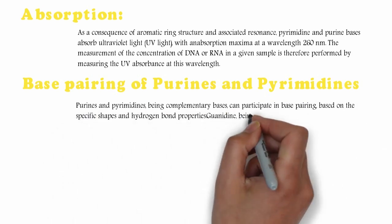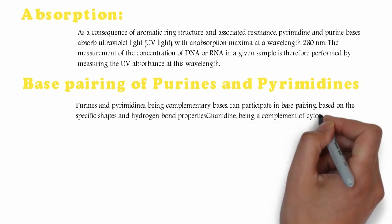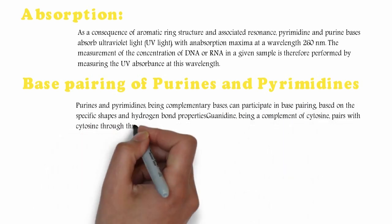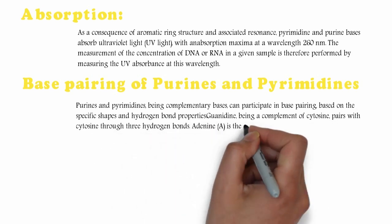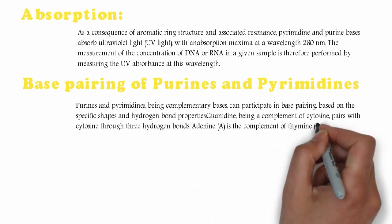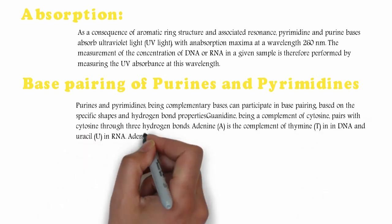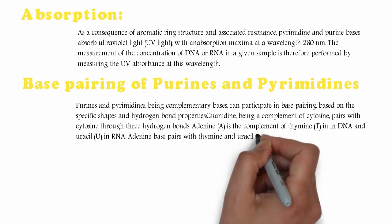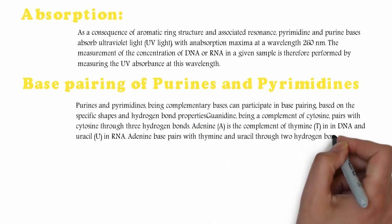Guanine, being a complement of cytosine, pairs with cytosine through three hydrogen bonds. Adenine (A) is the complement of thymine (T) in DNA and uracil (U) in RNA. Adenine base pairs with thymine and uracil through two hydrogen bonds.